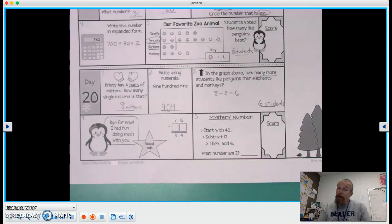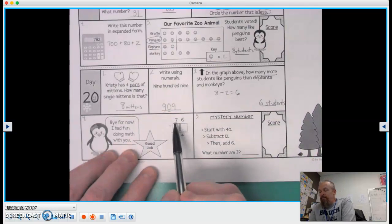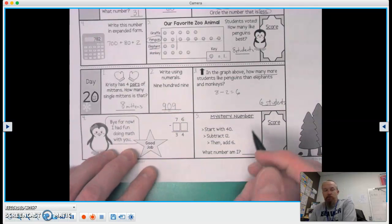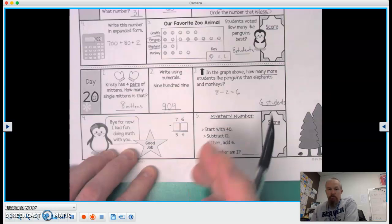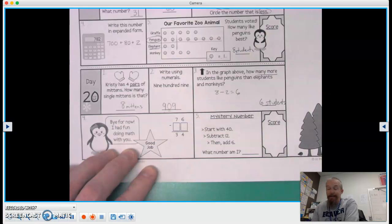Number four. Bye for now. I had fun doing math with you. Oh, me too. Thank you. Is that Lily? Is that right? Okay. 76 minus something equals 34. Okay, well, maybe you want to think of it as four plus what equals six?